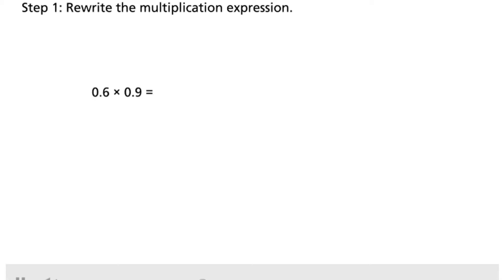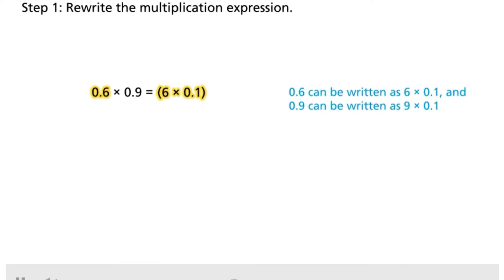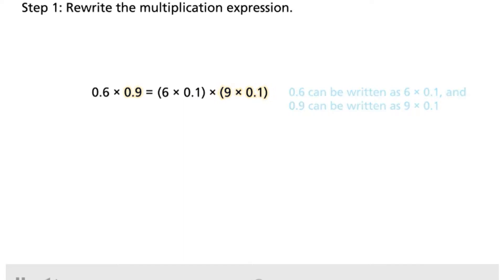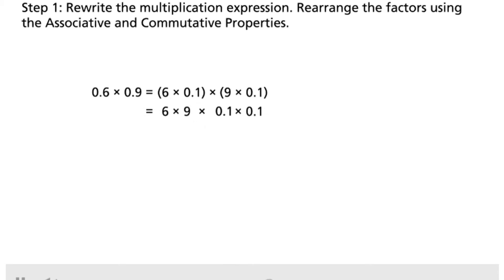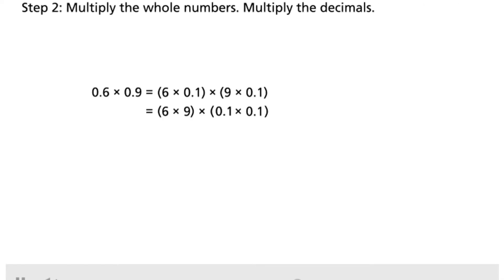Step 1: Rewrite the multiplication expression. 6 tenths can be written as 6 times 1 tenth, and 9 tenths can be written as 9 times 1 tenth. Rearrange the factors using the associative and commutative properties. Step 2: Multiply the whole numbers, then multiply the decimals — 1 tenth times 1 tenth equals 1 hundredth.